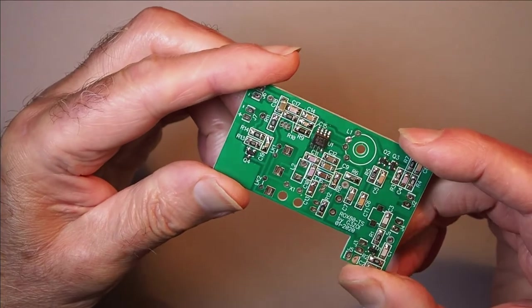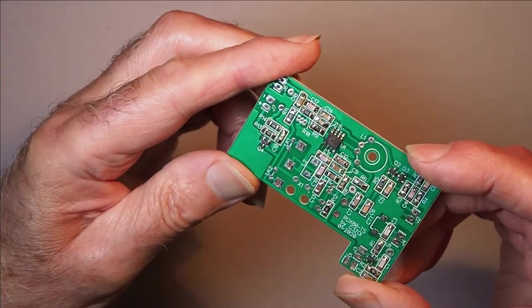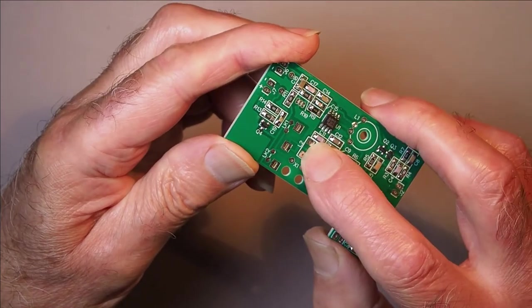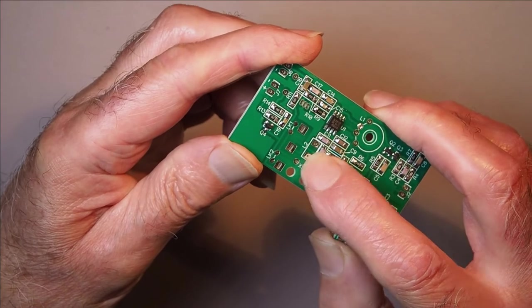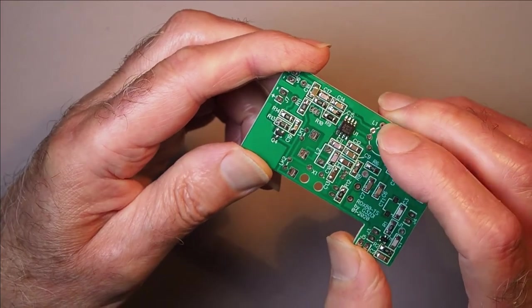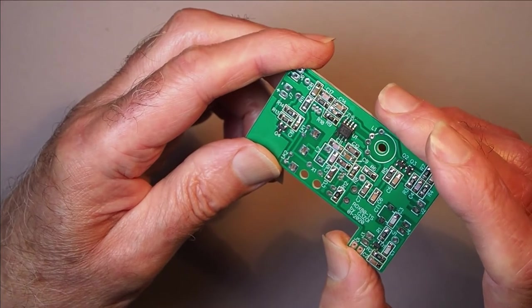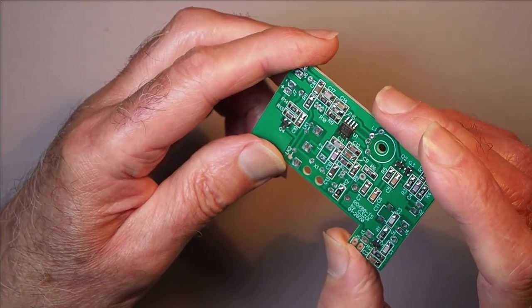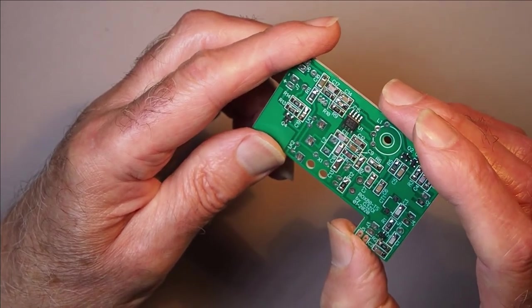So what you'll need to do initially to test the oscillator pulling range is to short L2 so you've got no additional inductance. And if you're lucky the ceramic resonator will pull down to 3.51. Now if it doesn't you've got two options.